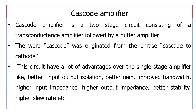Next is the cascode amplifier. The cascode amplifier uses two different types of amplifiers instead of the same configuration. The term cascode is derived from cascade to cathode. This circuit has many advantages over a single stage amplifier: apart from gain, you have high input impedance, high output impedance, stability, and a higher slew rate.